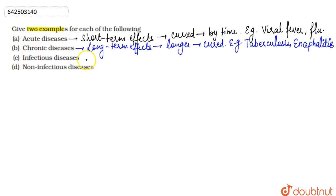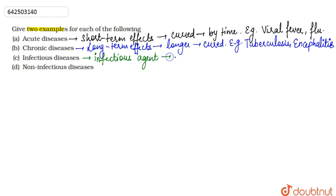The next part is infectious diseases. These are diseases which are caused by some infectious agent, either transmitted from an infected person to a normal person, or when an infectious agent enters the body of the organism. Examples include chickenpox and smallpox, which are caused by a virus.